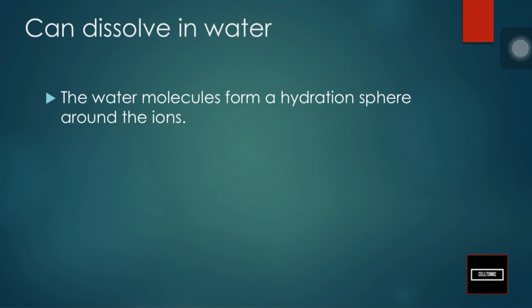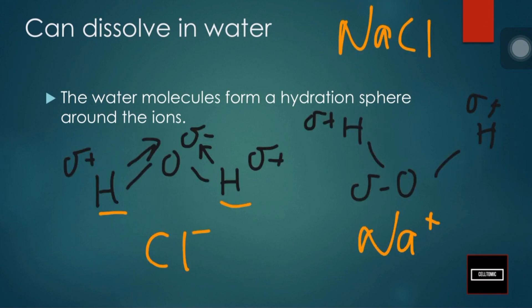Ionic compounds can dissolve in water as they can form a hydration sphere around the ions. This explanation is not part of the O-level syllabus — you will learn more about the hydration sphere after O-levels, in polytechnic or JC if you continue with chemistry. Thank you for watching and bye.